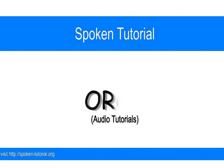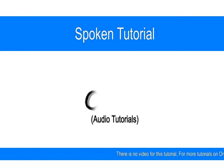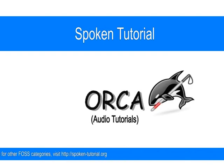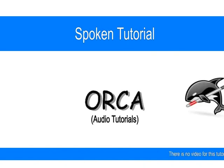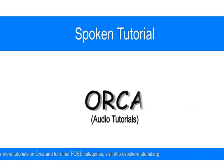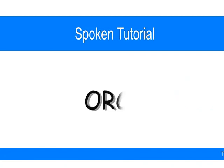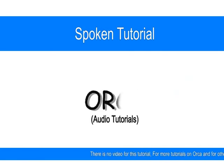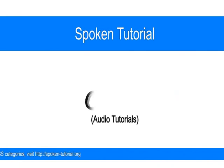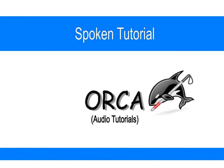Now we are going to write the actual content. Let's shift to left alignment by pressing Ctrl+L. Orca tells us 'align left on, centered off'. The text we type will now be aligned left, meaning every line will start from the left margin. Let's type some introductory matter: 'Orca is a screen reader for GNU/Linux based desktop.'